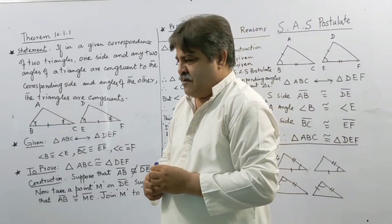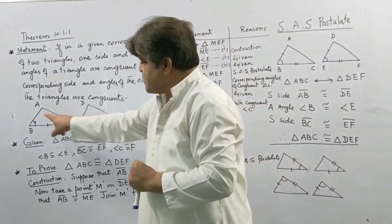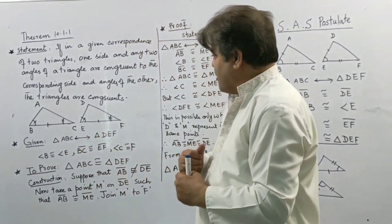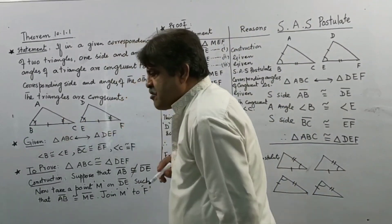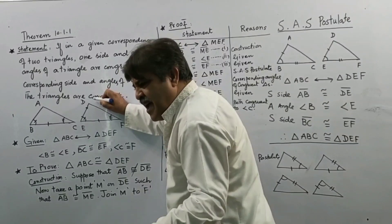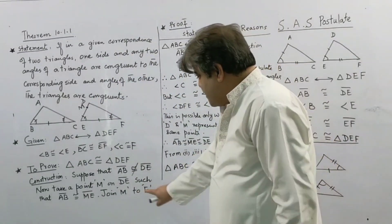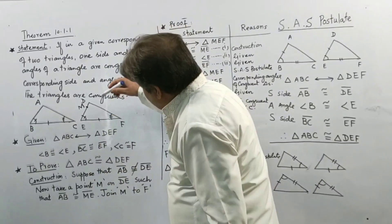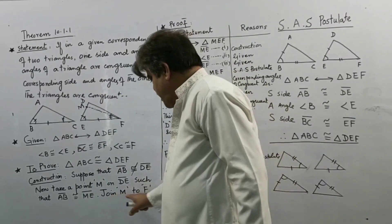You must think by yourself — is it true? The answer is: not true, because if this side and this side are not congruent, the triangles will not be congruent, since for congruent triangles all sides must be congruent. So we take a point M on DE such that AB is congruent to ME, and then join M to F.